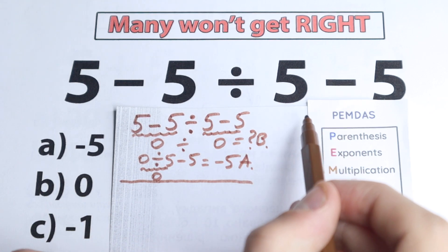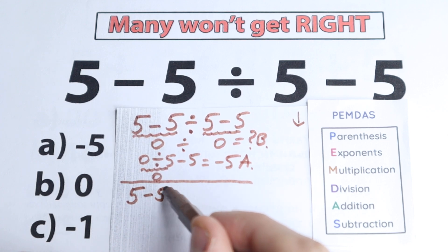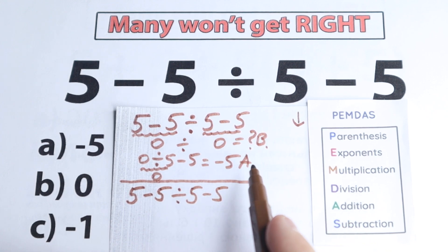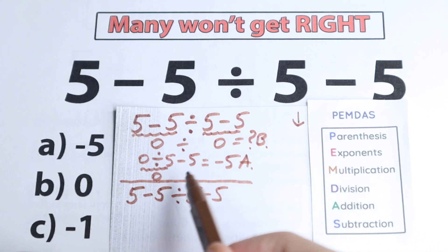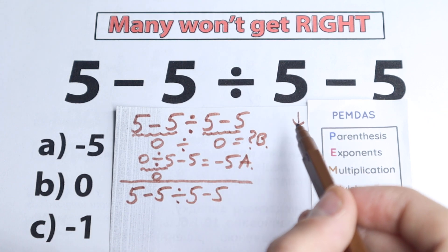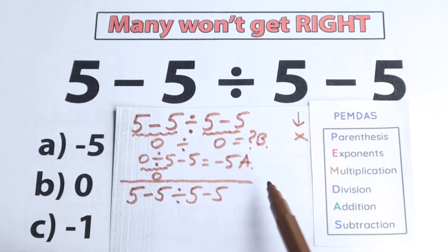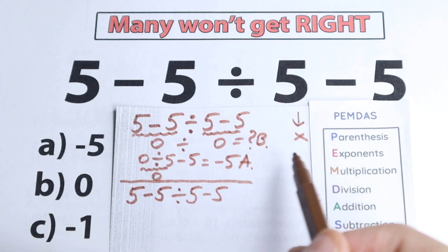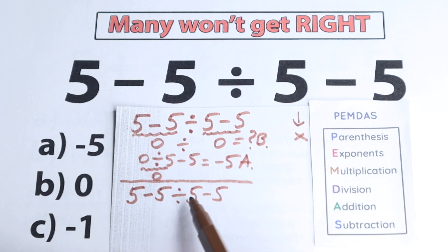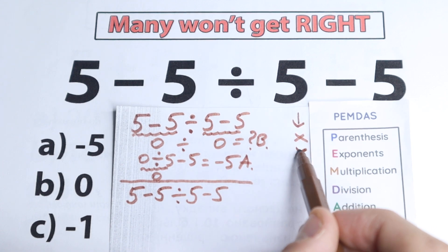First, let's go through the PMDMC order with our question: 5 minus 5 divided by 5 minus 5. First step — parentheses. Let's look — do we have any parentheses? No, we don't see any. We don't have any parentheses, so we just skip this part. Next — exponents. Maybe squares or cubes? No, we don't see any of those. We have a regular expression without any exponents or powers — only 5 without any powers. So we skip the exponent part as well.